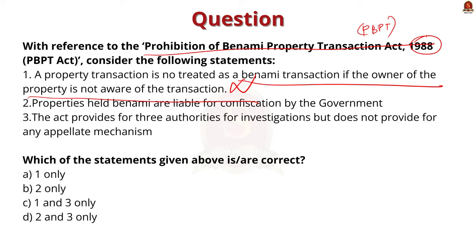The second statement says properties held benami are liable for confiscation by the government. The Act provides for confiscation of benami property, meaning the government can take over the property without paying any compensation to the benamidar — the person in whose name the property is held. The confiscated property is then vested in the Central Government free from all encumbrances.